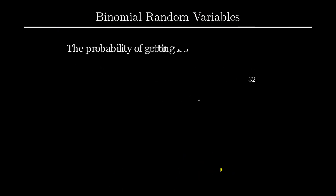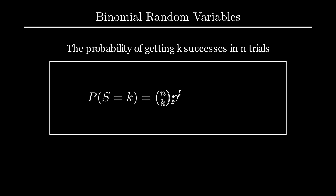To recap, the number of ways to get k successes through n trials is given by n choose k times p to the k times 1 minus p to the n minus k. The expected number of successes through n trials of a binomial random variable is given by n times p. The variance is given by n times p times 1 minus p. These are derived by multiplying the expected value of a Bernoulli experiment by the total number of Bernoulli trials n.